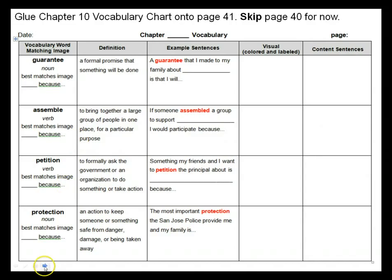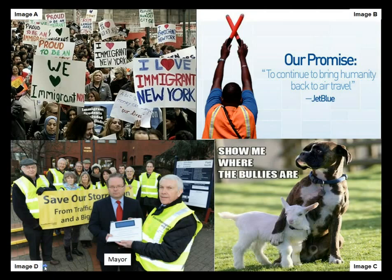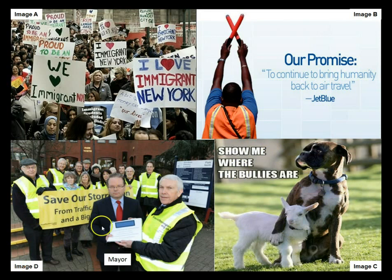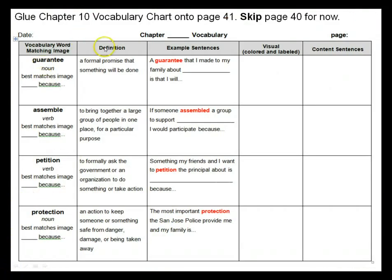Here we go to the next slide. This is image A right here. Image B is this one. Image C — very cute — right here. And image D is right here. Notice we have a little label there to help you. Why don't you pause now, keep these images up in front of you, and then work with your partner to complete columns one, two, three, and four on this chart.